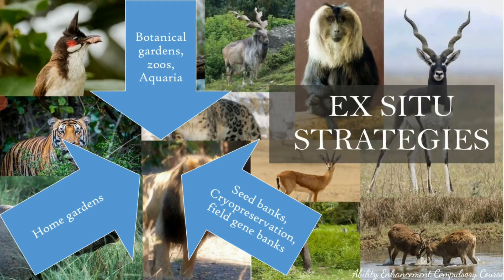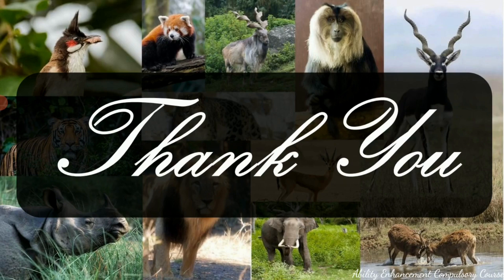Ex-situ strategies include protection of biodiversity away from its habitat. This includes construction of botanical gardens, zoos, and aquaria where different types of species can be kept. We can also have seed banks, cryopreservation, and field gene banks, where gametes of threatened species are stored in a fertile condition so that much later in the future, when the right habitat is available, they can be grown. Even home gardens can be considered an ex-situ strategy for conservation.